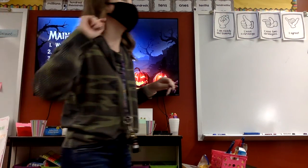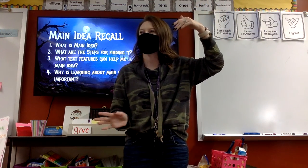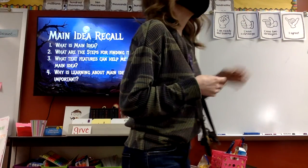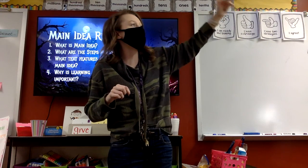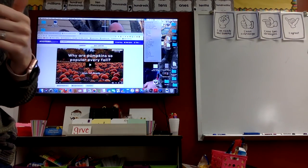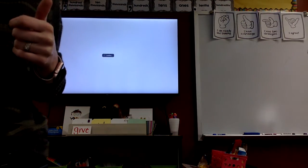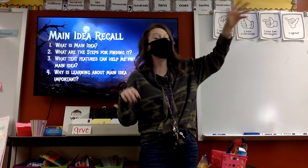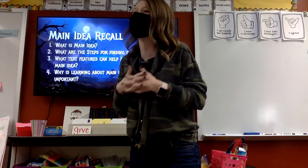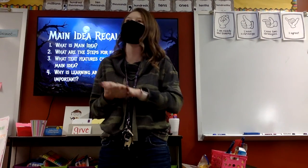Step number two: reread the beginning and the end. Okay. Step number three: ask... That is one thing I'm seeing us get hung up on. We're looking at the first, second, and last sentence and just picking one of those and calling it good — sometimes we get lucky and we're right, sometimes we're not right at all. We're really good at picking a first, second, last sentence. What we struggle with is really asking ourselves the who or what. As we get deeper into passages today, first, second, last sentence isn't always going to be there to help us.